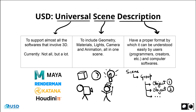Such as Maya, Katana, Houdini, Render Man, Arnold, etc. By scene, we mean the composition of different 3D assets in one scene, which can include geometry, materials, cameras, lights, and even animation data.